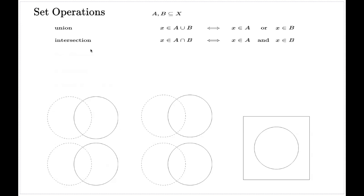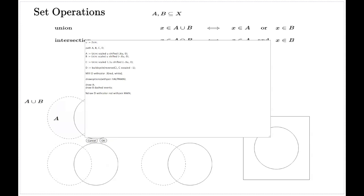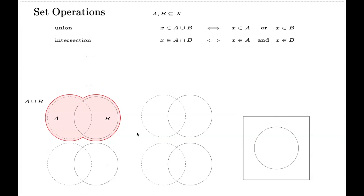Set operations can also be demonstrated with the help of diagrams. For instance, if the dashed circle represents the set A and the solid circle represents all points of the set B, then the union of these two sets will be the combination of the two circles together — the area shaded in pink.